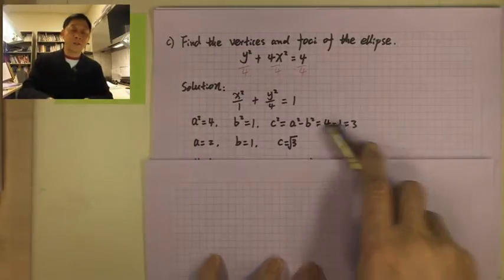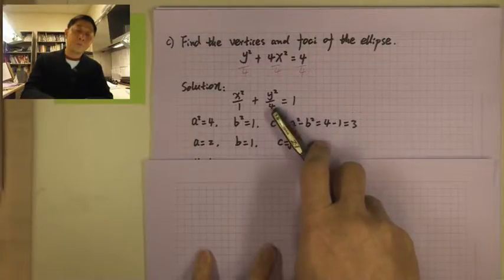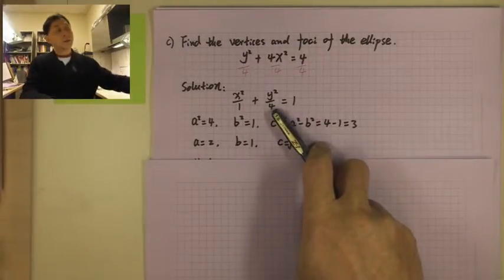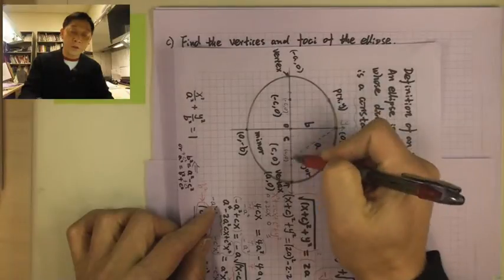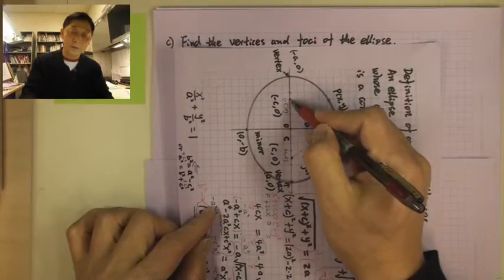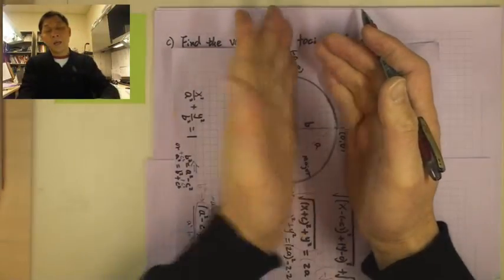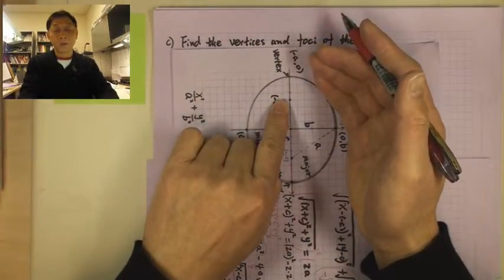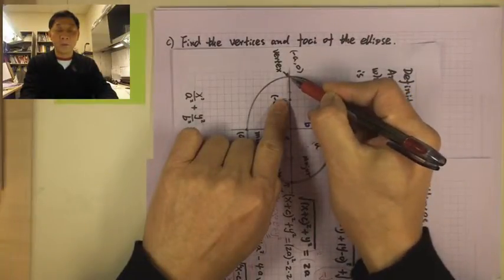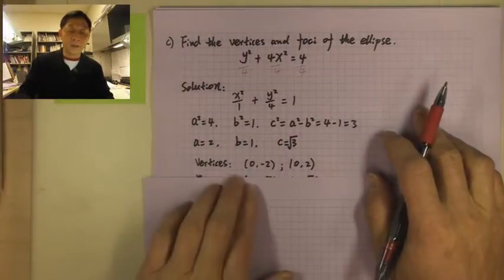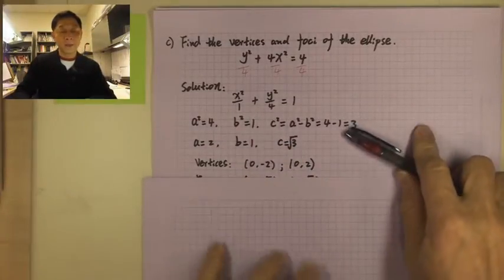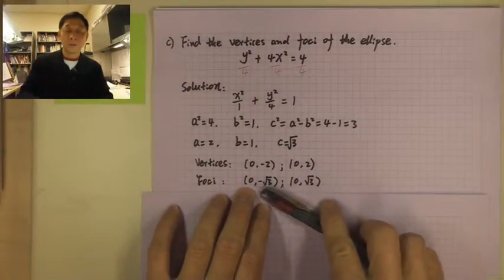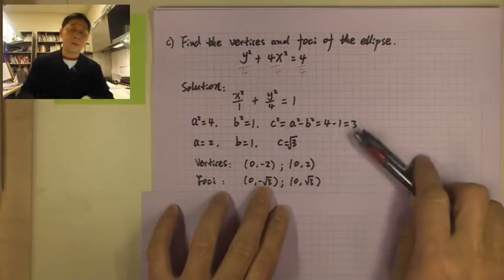Again, the big number is below y, so the ellipse is in the vertical direction. The focal points will be along the y-axis. So the vertices will be (0, ±a) and the foci will be (0, ±c).